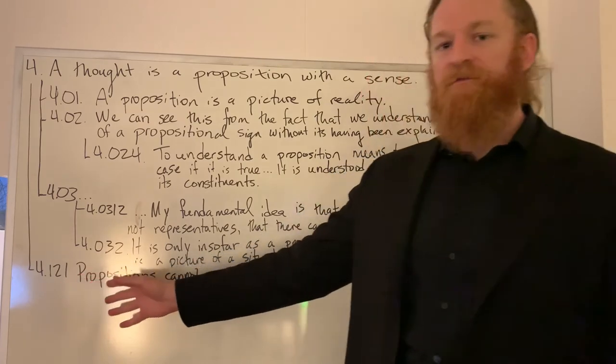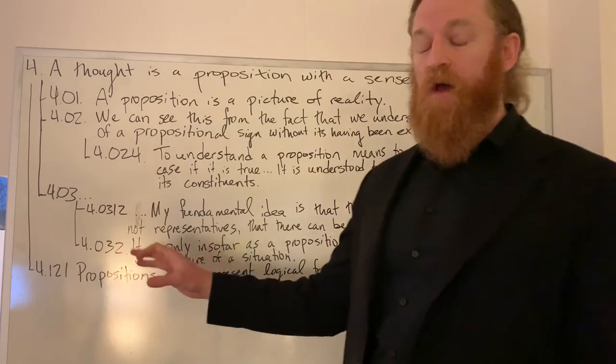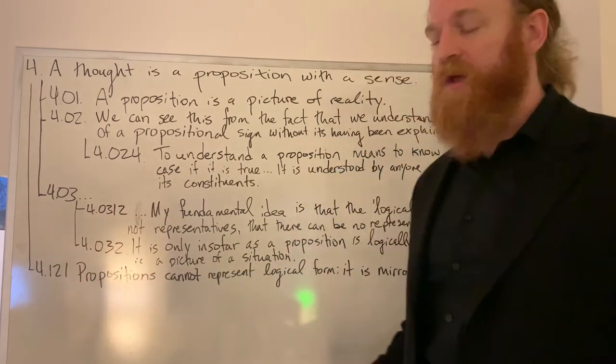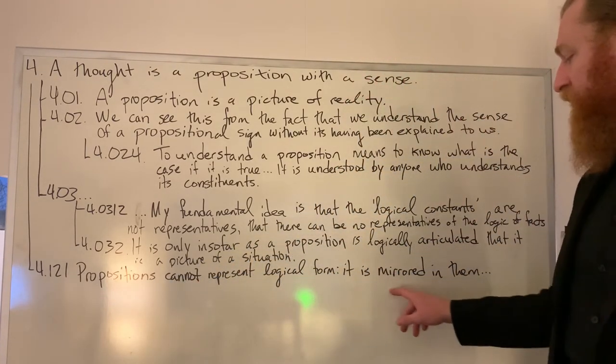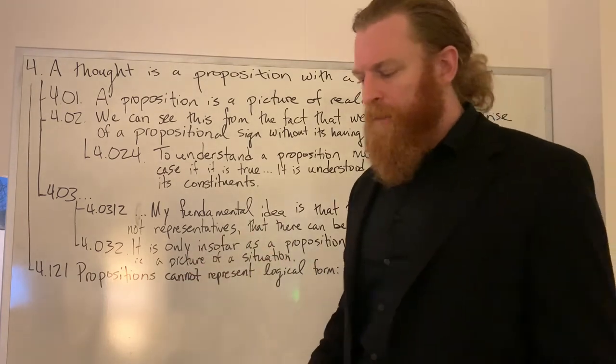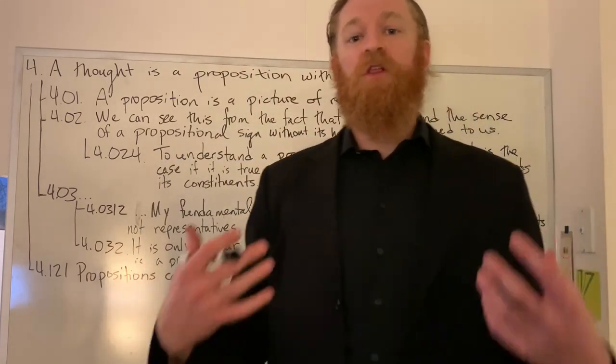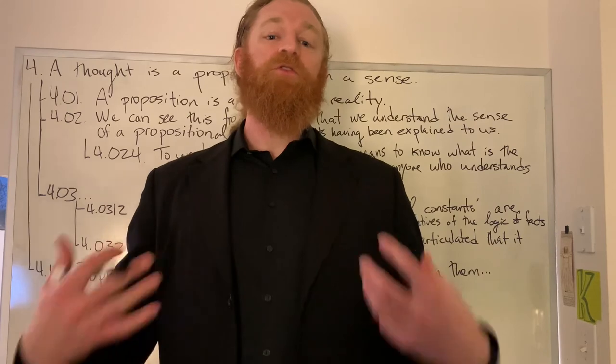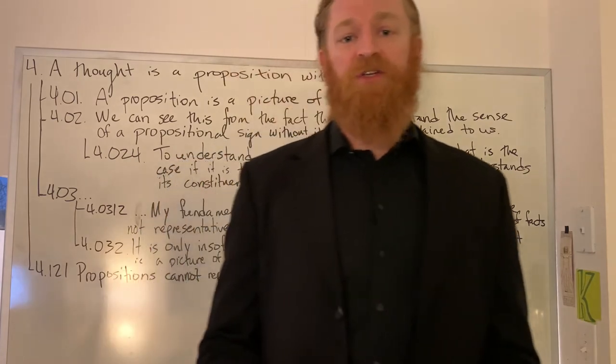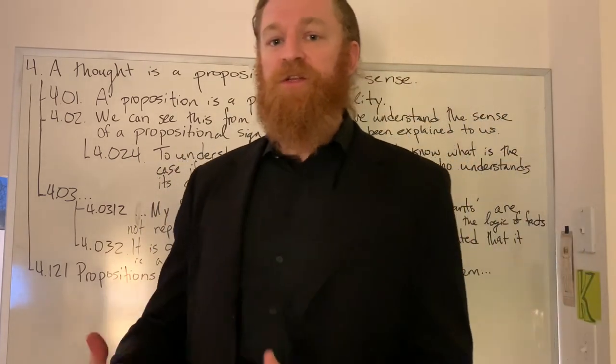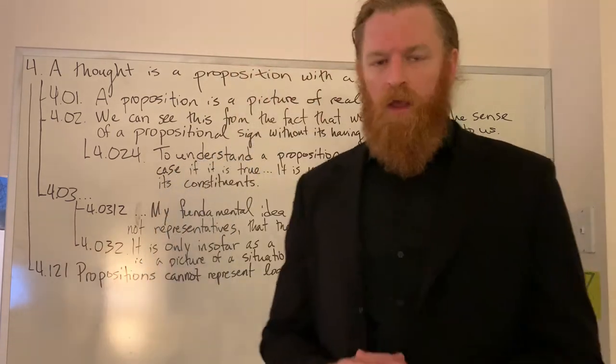In 4.121, Wittgenstein gives an important proposition that we'll need to keep in mind for later on when he comes to the limits of what can be put into language. Here he says, propositions cannot represent logical form. Logical form is mirrored in the propositions. The idea here is that if we wanted to put logical form into language, we would have to use language which already is using the logical form. The logical form is simply something that has to be shown through the construction of our propositions. It cannot be put into a proposition because the proposition is already made out of that logical form.